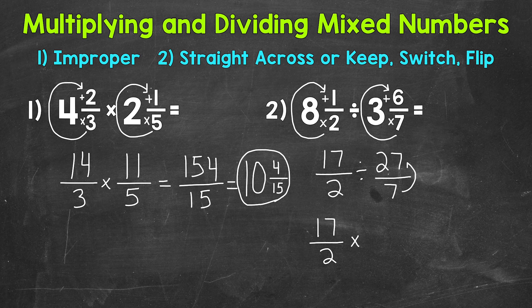And since we switch to the opposite of division, we're going to flip our second fraction. Meaning the 7 is going to be our numerator and the 27 is going to be our denominator. This is called the reciprocal. Now we can multiply straight across. So 17 times 7 and then 2 times 27.